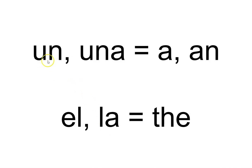Now we're going to look specifically at indefinite articles, which are 'un' and 'una.' This is the equivalent of 'a' or 'an' in English. When you say 'the car' you're using the definite article 'the,' but when you say 'a car,' 'a' is the indefinite article. The Spanish equivalent is 'un' or 'una.'